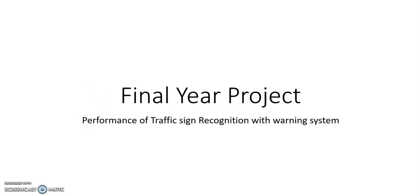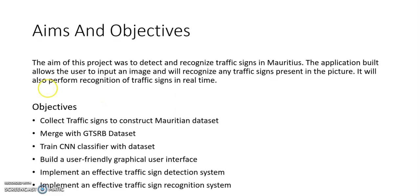This demonstration contains different parts. First of all, we will talk about the aims and objectives of this project. The aim of this project was to build an application to detect and recognize traffic signs solely in Mauritius. The application will allow the user to input any image of his choice and will recognize any traffic signs present in the image. It can also perform traffic sign recognition in real time.